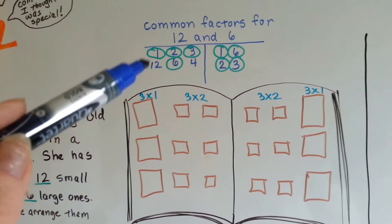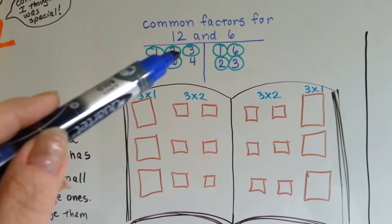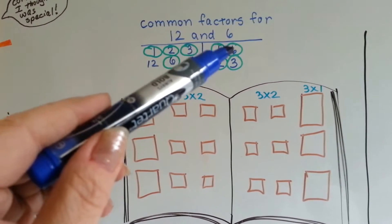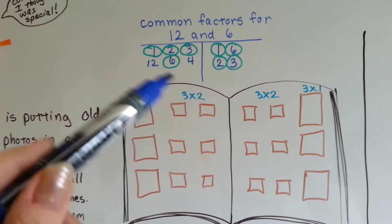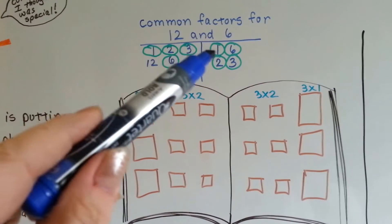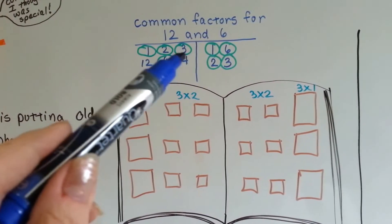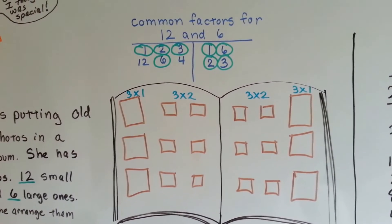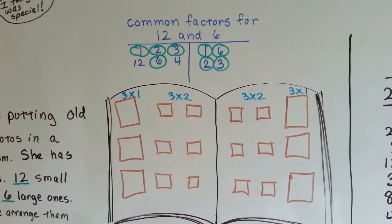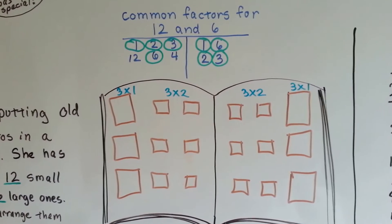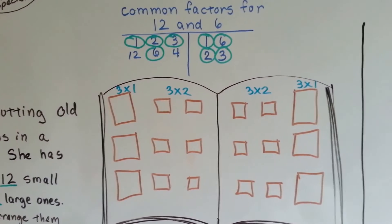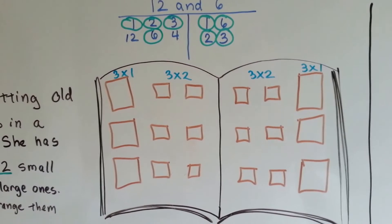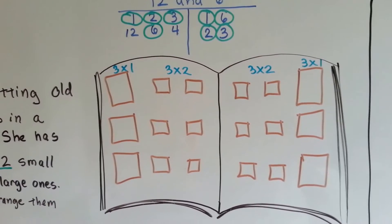Factors of 12 are 1 times 12, 2 times 6, or 3 times 4. Factors of 6 are 1 times 6 or 2 times 3. They both have a 1, a 2, a 3, and a 6. So 1, 2, 3, and 6 are the common factors for 12 and 6. She can arrange them with any one of those numbers and she should come out okay.